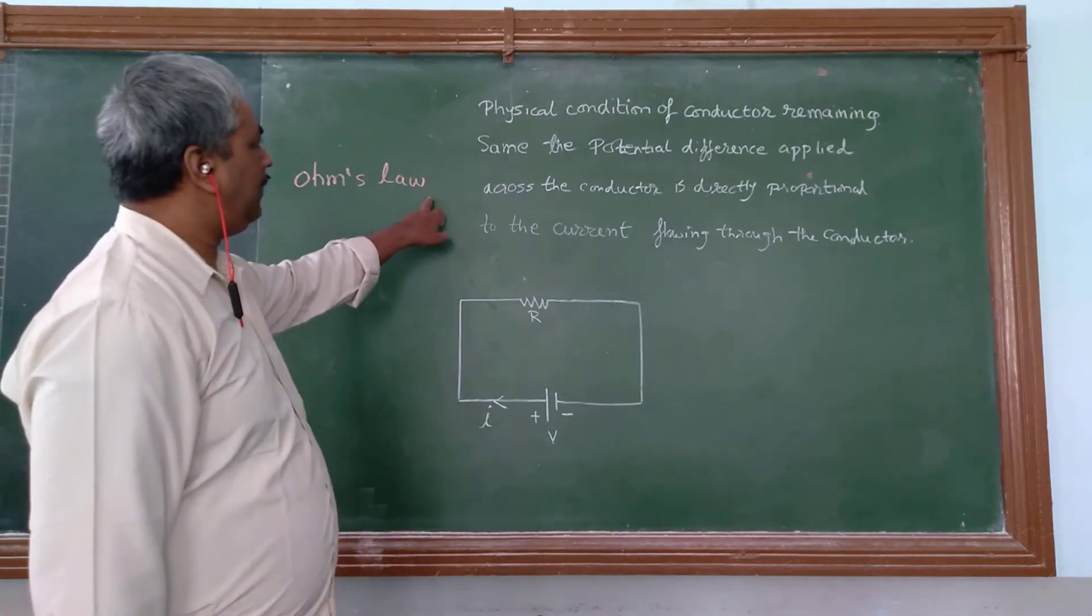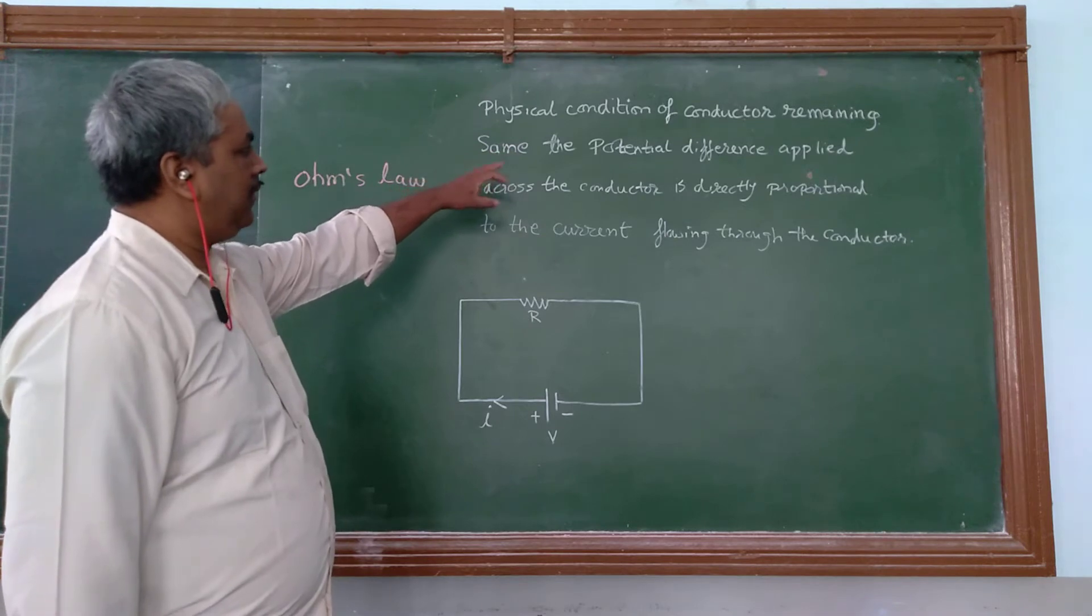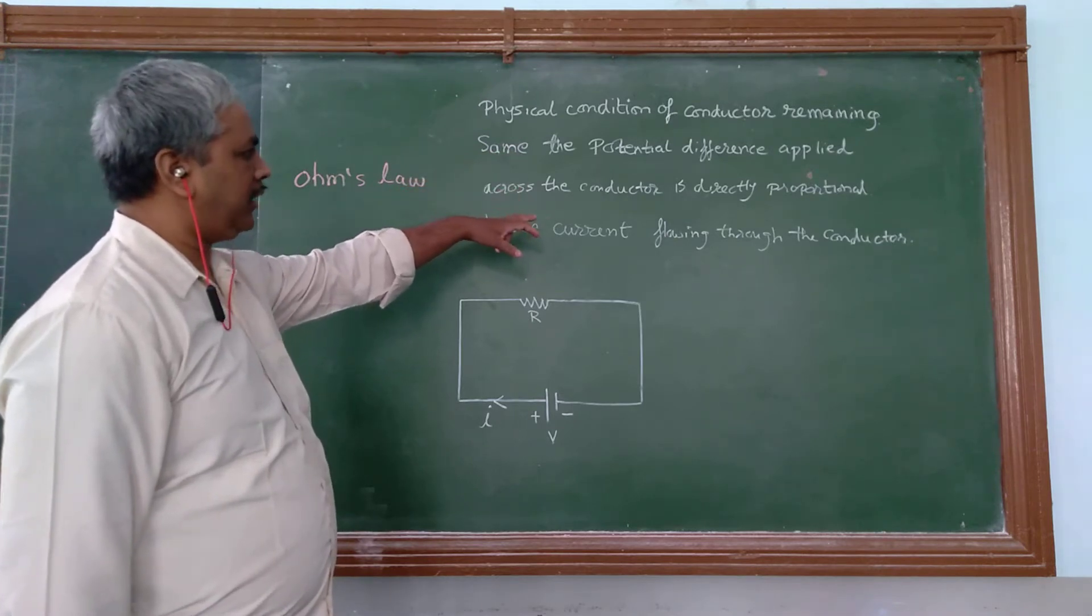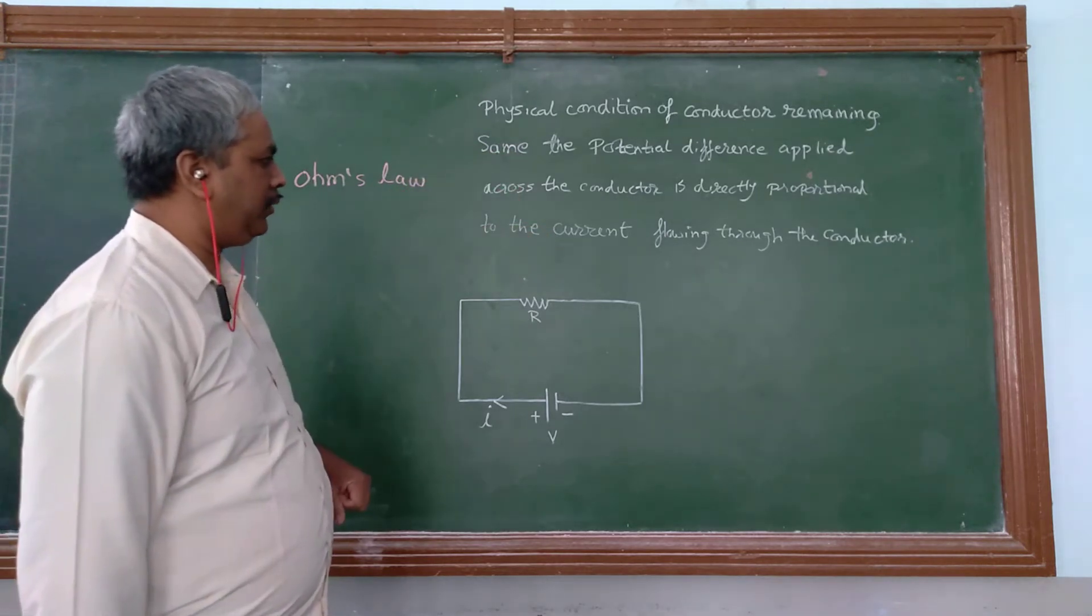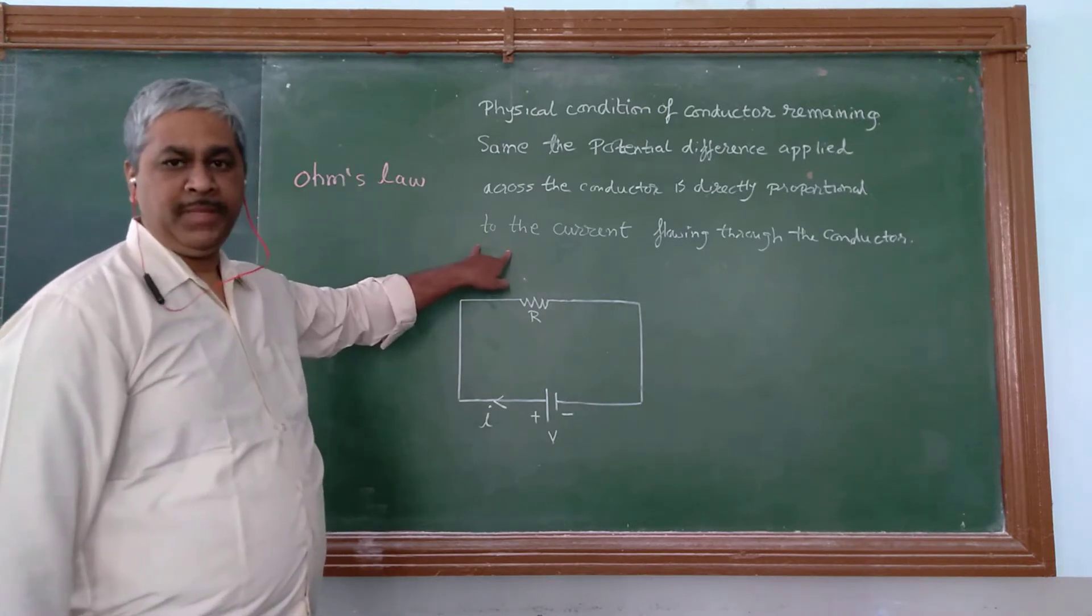Ohm's law states that physical conditions of a conductor remaining same, the potential difference applied across the conductor is directly proportional to the current flowing through the conductor.